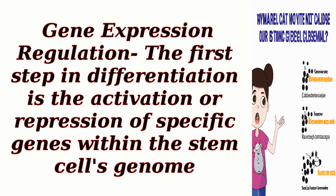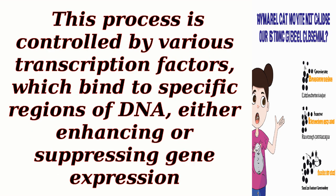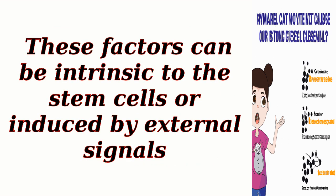Gene expression regulation: The first step in differentiation is the activation or repression of specific genes within the stem cell's genome. This process is controlled by various transcription factors, which bind to specific regions of DNA, either enhancing or suppressing gene expression. These factors can be intrinsic to the stem cells or induced by external signals.